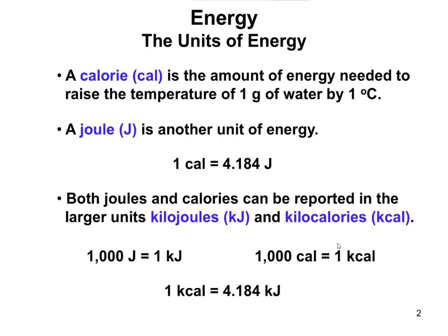Whenever we look at energy, there are two different units and ways to measure it. One is the calorie, defined as the amount of energy needed to raise the temperature of a gram of water by one degree Celsius. The other unit is the joule. You can see the conversion between calories and joules on your formula sheet, so you don't need to memorize it — but you should be able to convert from calories to joules and vice versa.